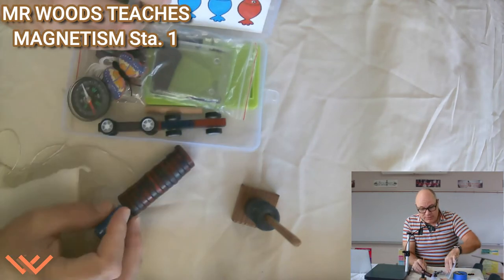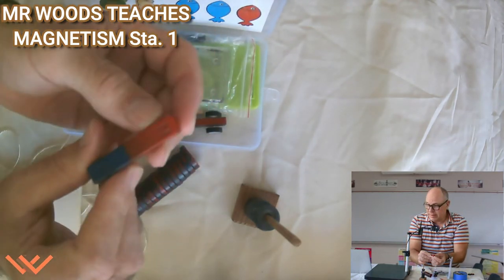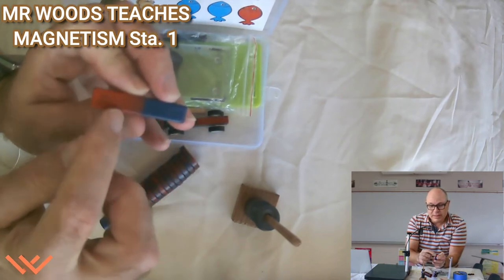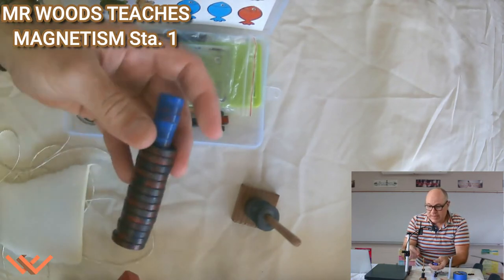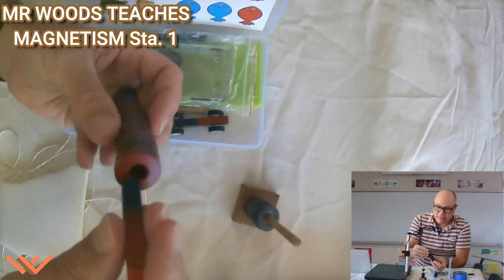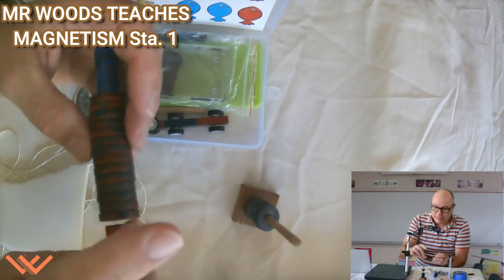And if we remember, north, according to these magnets here, see how it says north here? North is going to be red and south is going to be blue. So those attract, those don't, those repel each other.